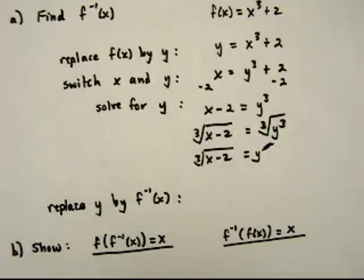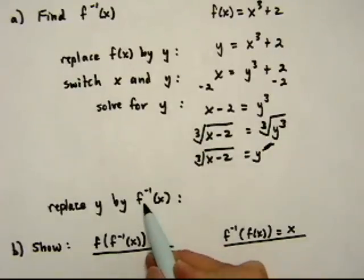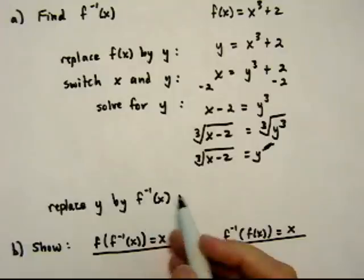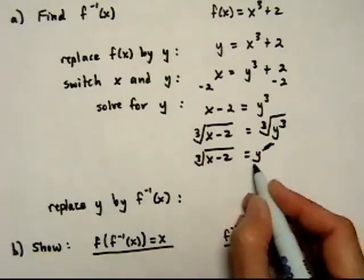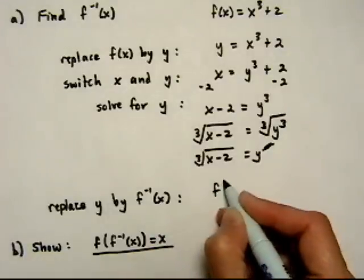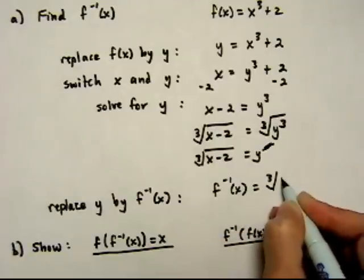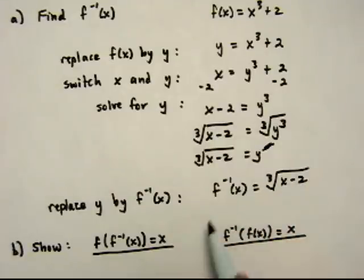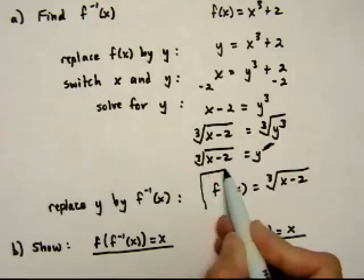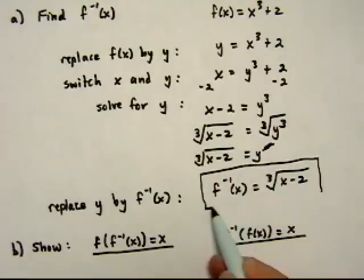And now the last thing is just a notation change. Replace y by f inverse. And I'll write it on the left side here instead of on the right side. So f inverse of x is equal to cube root of x minus 2. So that is the inverse function of f of x.